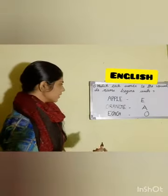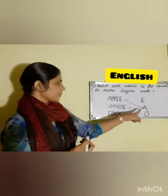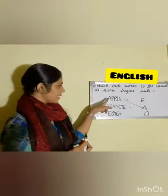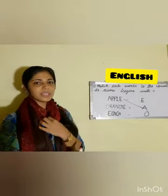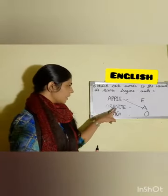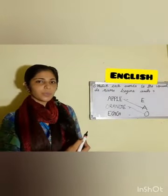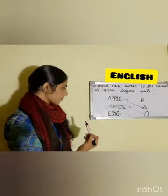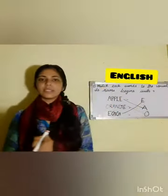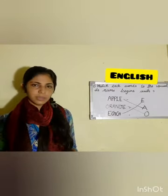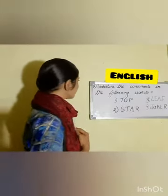The first word is apple. A as in apple — this word starts with the letter A. Our next word is orange. Orange starts with the letter O, so the answer is letter O. Then our next word is egg. Egg starts with the letter E, so just match with the letter E. Clear, my dear children?